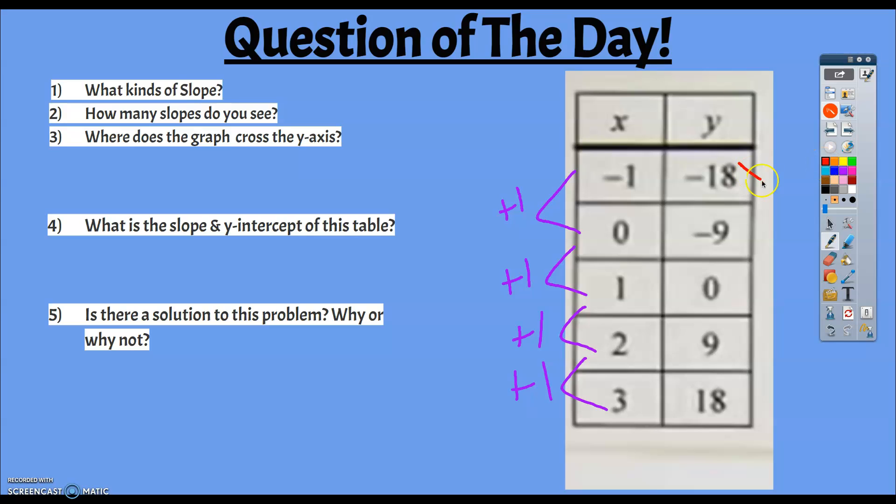Now let's move over to red. We'll go check out our y. We're going from negative 18 to negative 9. If you know that we're going up and we're adding 9, from negative 9 to 0, we're adding 9, you see that consistency, right? It's happening every time. From 9 to 18, we're going plus 9.